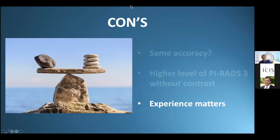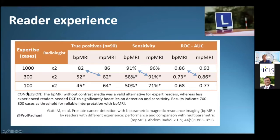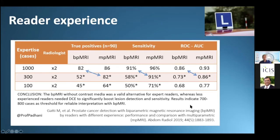Experience matters. If you have expertise reading 300 cases with multiparametric MRI, you have an area under the curve of 86%. To achieve the same AUC with biparametric MRI only, you need approximately 1,000 patients — far more cases and higher expertise. Furthermore, if you continue with multiparametric MRI, your final area under the curve is higher compared to using biparametric only.